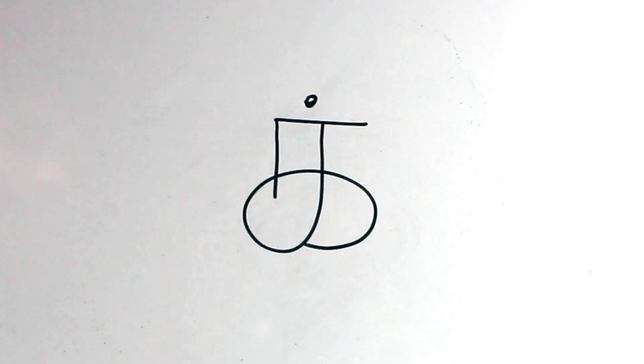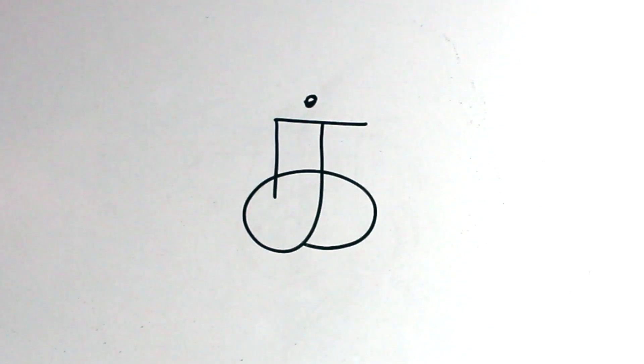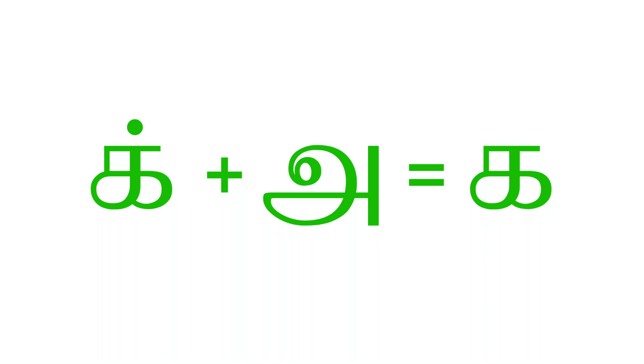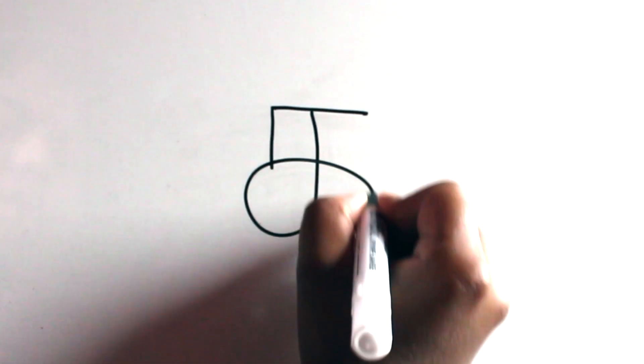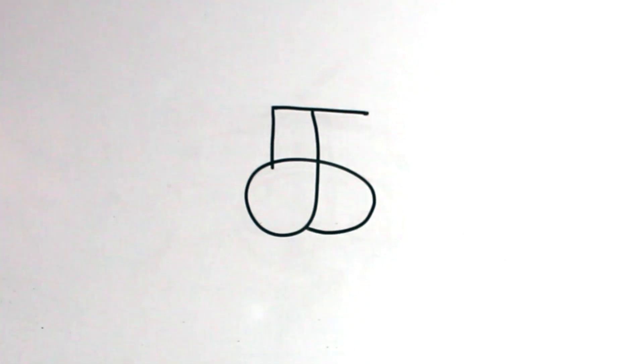Consonants in Tamil are easy to spot because they all have a dot on top. Combining ik and a gives us the compound letter ka. Now let's look at how to write the letter ka. Let's write that again.